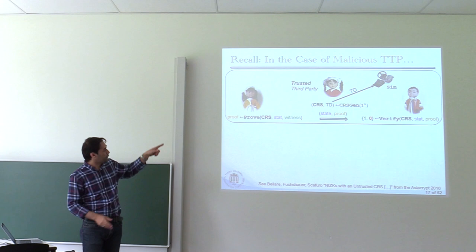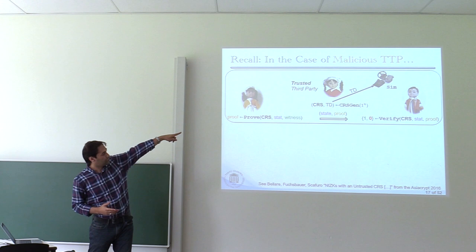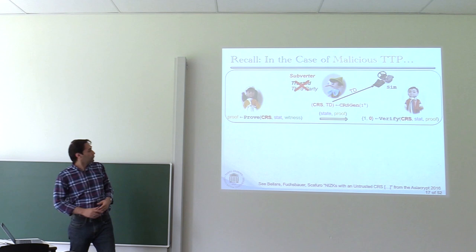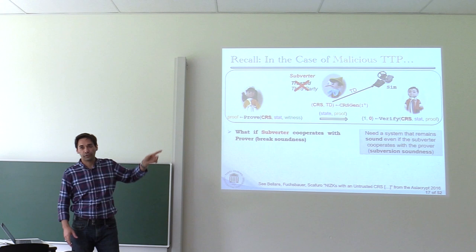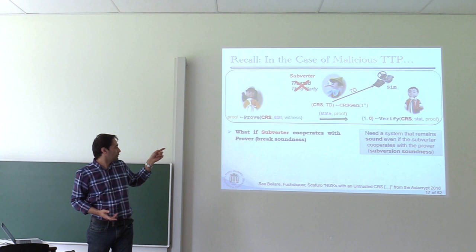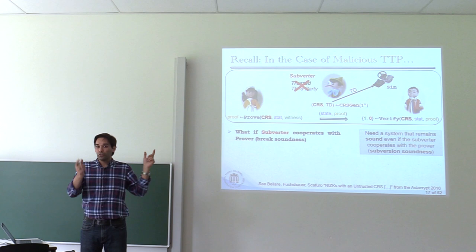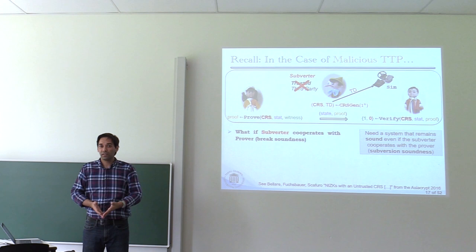We started to think about this trusted party. What does the trusted party generate? To prove zero-knowledge we need to construct a simulator, which needs the trapdoors of the CRS. One can easily ask: what if this malicious CRS generator — I'll call them the subverter — cooperates with the prover? We said the prover shouldn't be able to convince the verifier if he doesn't know the witness. But if they cooperate, you can easily break the soundness, because the simulator says that if you have zero-knowledge you have a simulator that without knowing the witness can generate a proof, and you can use that simulator to break soundness.